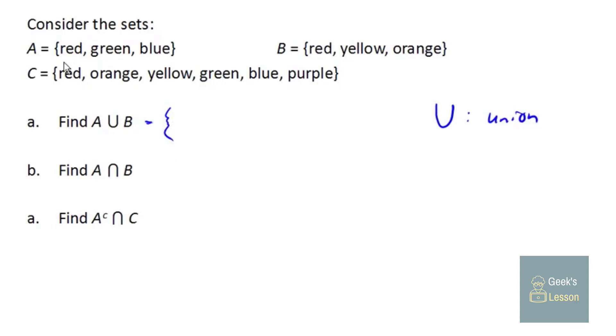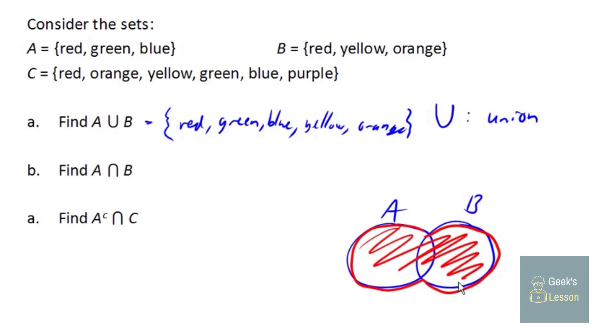So the union of sets A and B will take everything from A and combine it with everything from B. So we will have the red, green, and blue from set A, and we'll combine that with everything from set B. Now we already have red, so we don't need to list it twice. And there is the union of sets A and B. The idea behind unions is sort of in a visual form. If this is the set A and this is the set B, we're talking about everything that's contained in either set here. We want everything.